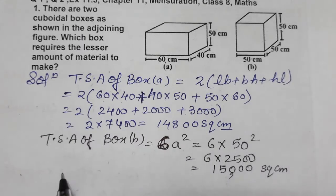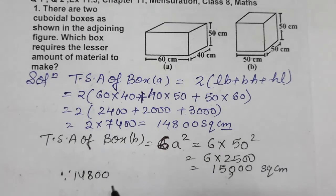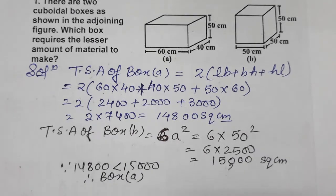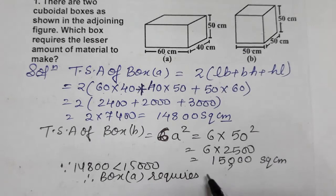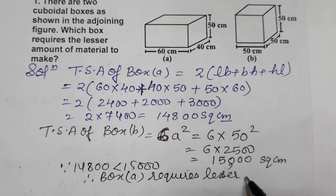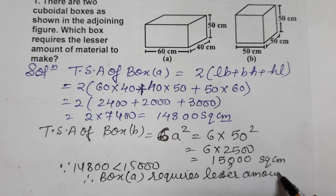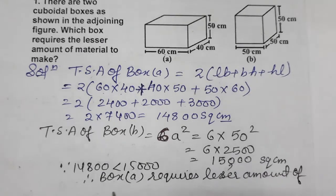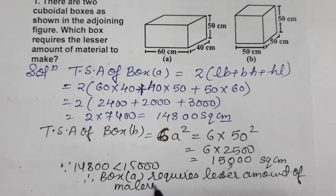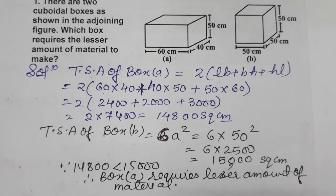Now which requires the lesser amount of material? Since 14,800 is less than 15,000, therefore we can say Box A requires lesser amount of material to make.